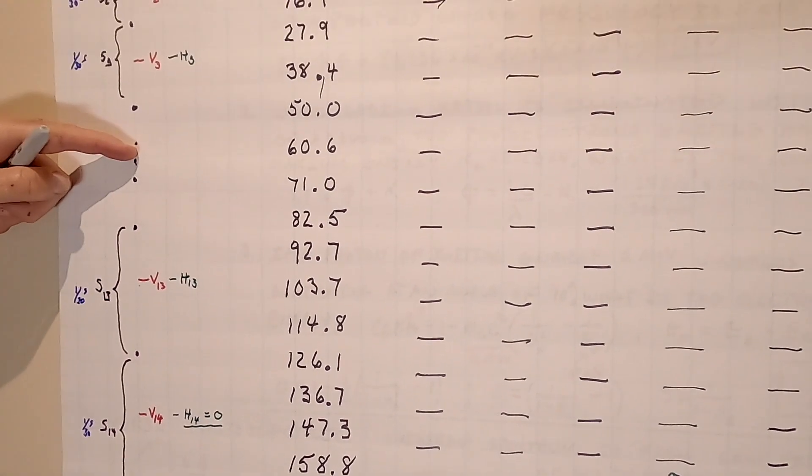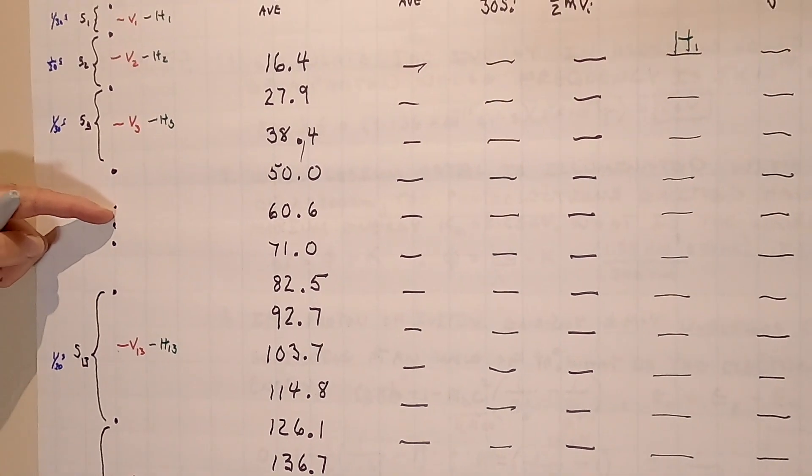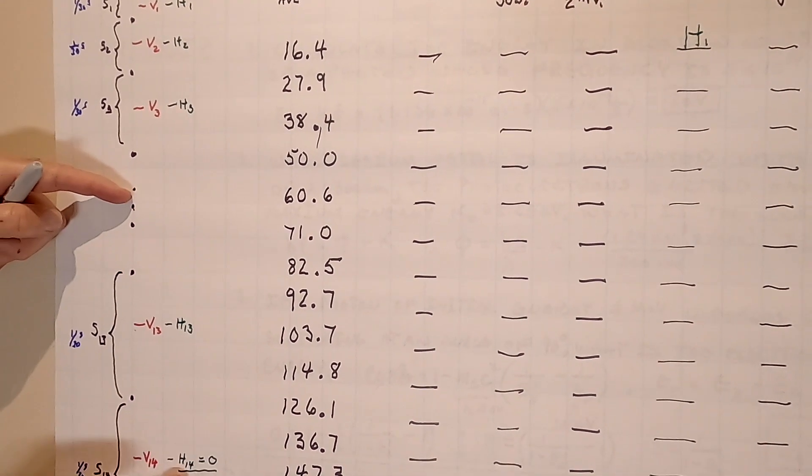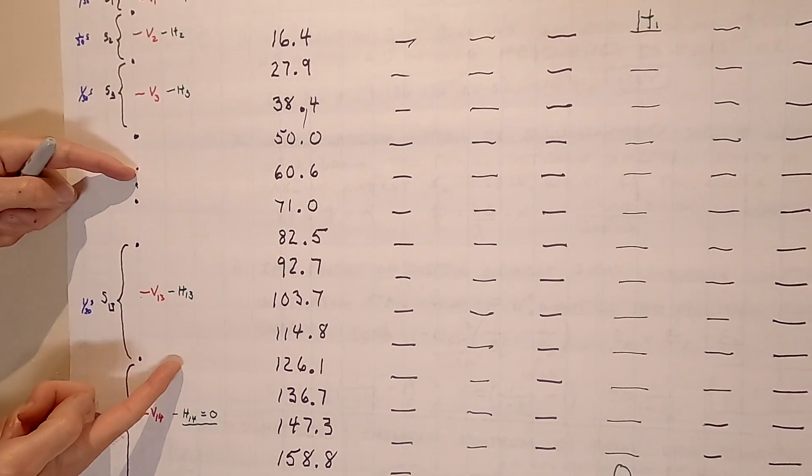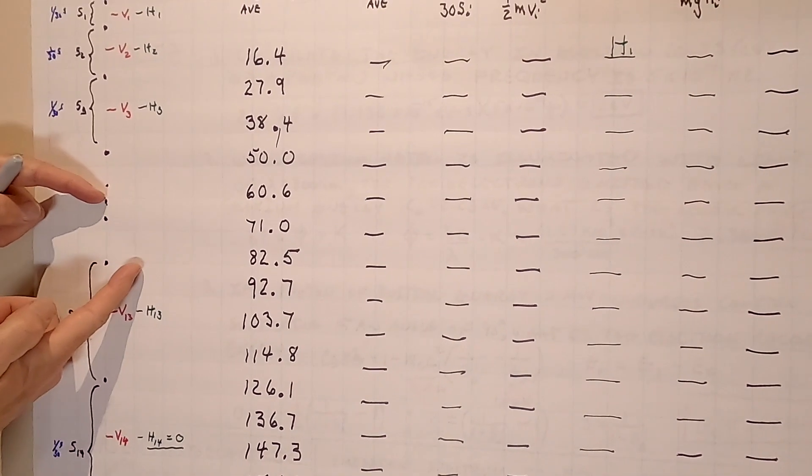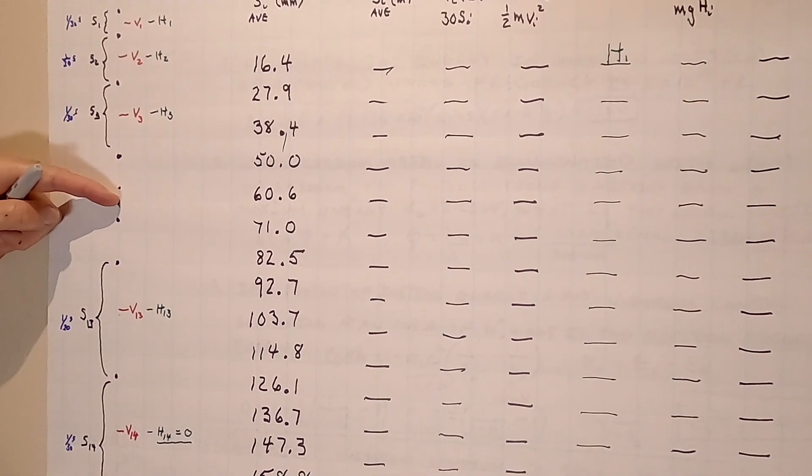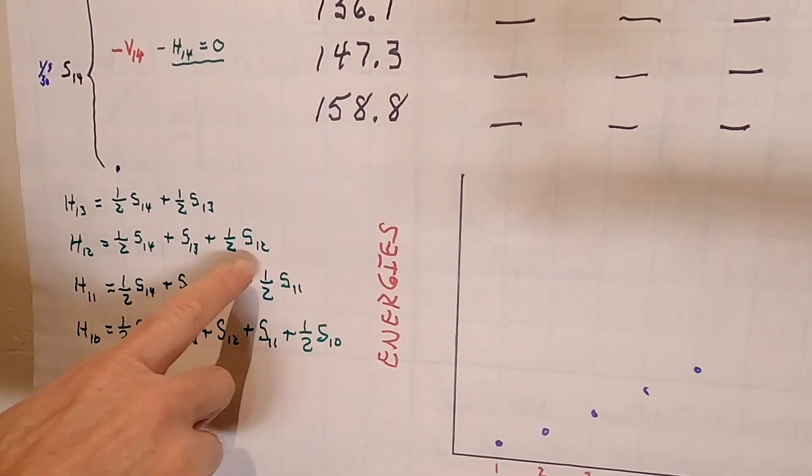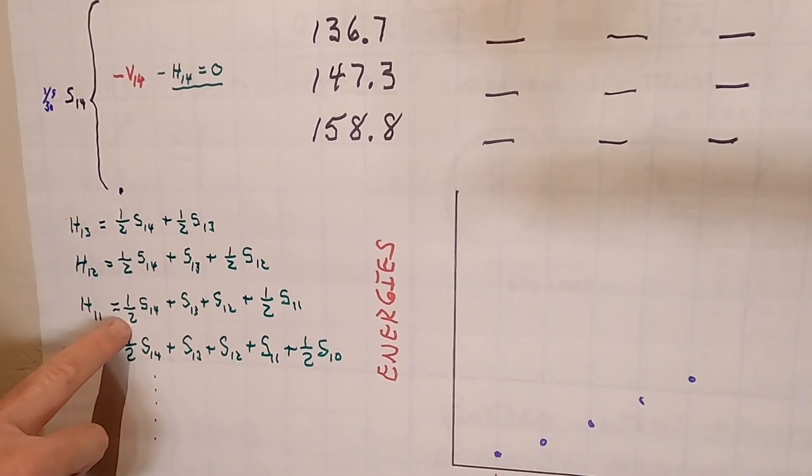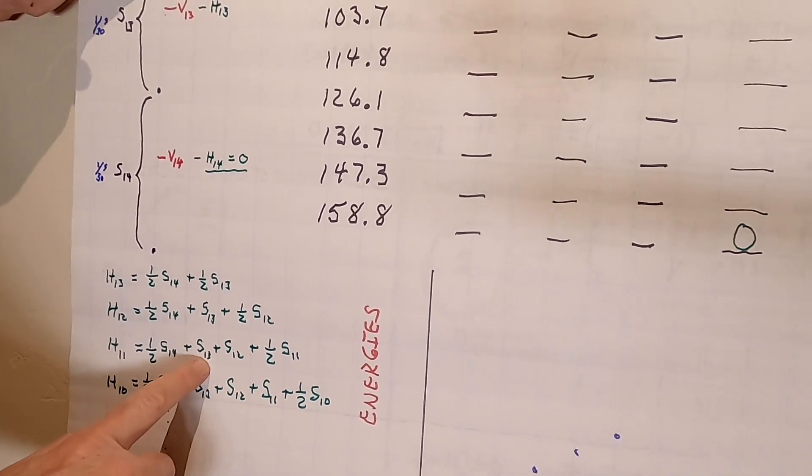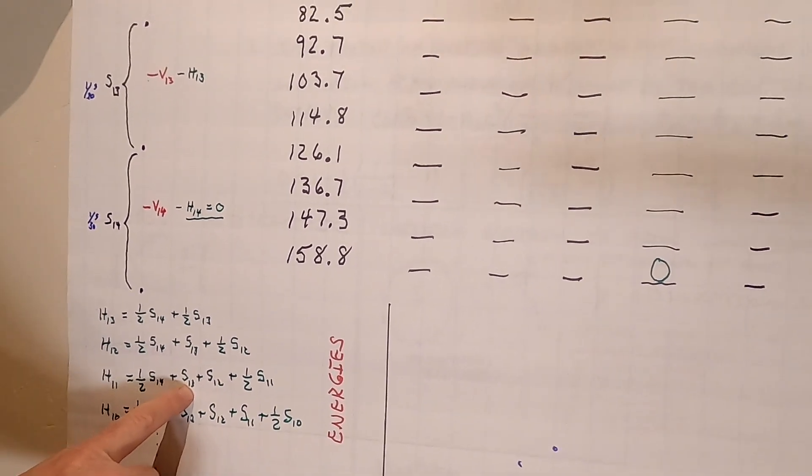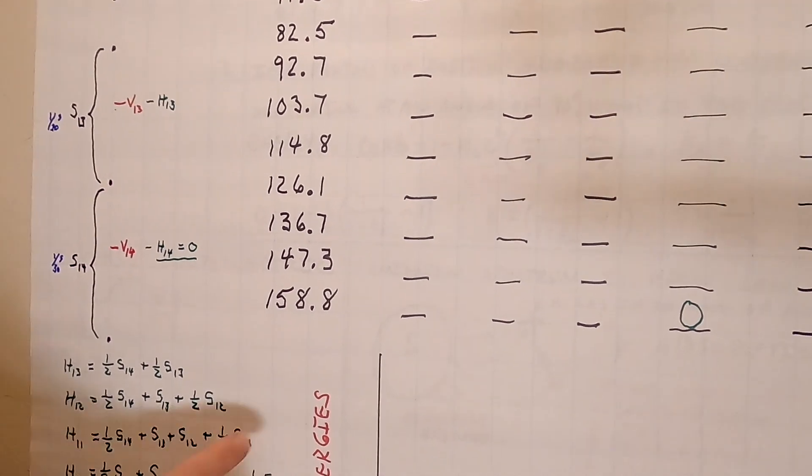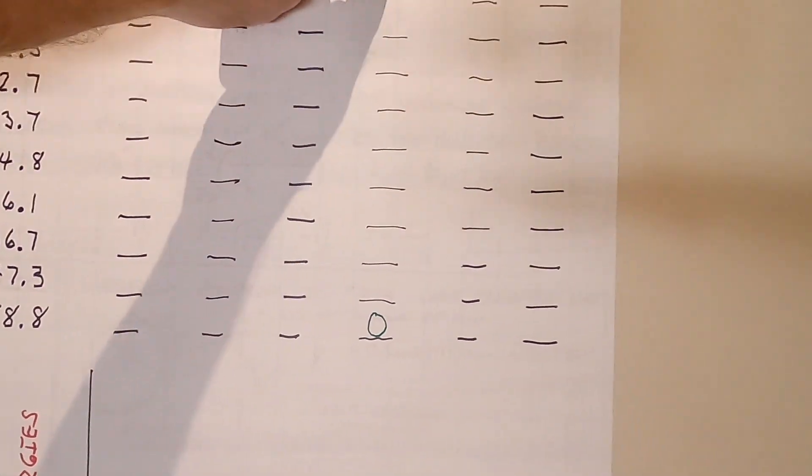The next one right here would be the next height up would be half of 14, all of 13, and half of 12. Then the next one would be half of 14, all of 13, all of 12, and half of 11, and so on. You're just going to keep working your way up and you can get the height all the way up. Use the meters, not the millimeters.